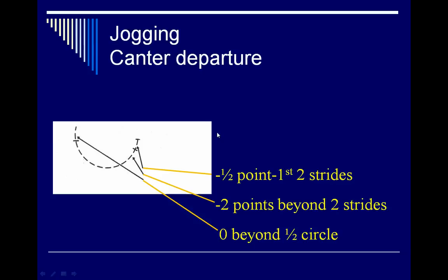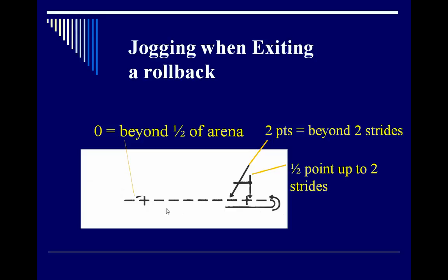For a canter departure — say after a spin — similar principles apply: jogging up to two strides is a half-point penalty, jogging beyond two strides is two points, and jogging beyond half the length of the circle results in a score of zero. Pretty much the same principle applies across the board.